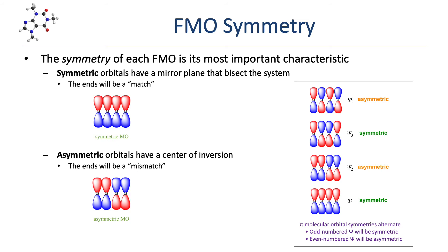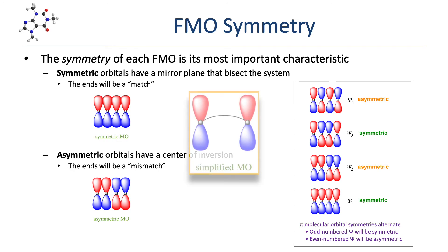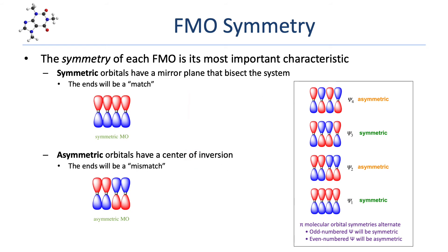Because only the symmetry of the orbitals is important, FMOs are often drawn with a simplified representation. Here is an example of a simplified drawing of a symmetric molecular orbital — only the two outermost atoms are drawn and are connected with a line that represents all the other atoms of the pi system. The symmetry of any pi molecular orbital can be determined quickly even without knowing what it looks like: odd-numbered pi molecular orbitals are always symmetric, and even-numbered pi molecular orbitals are always asymmetric.